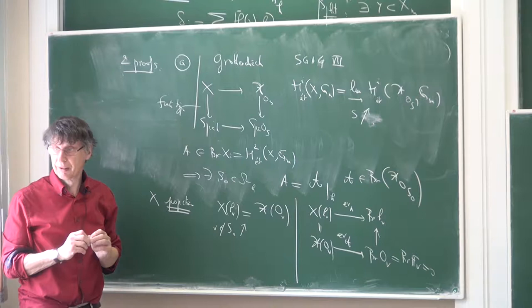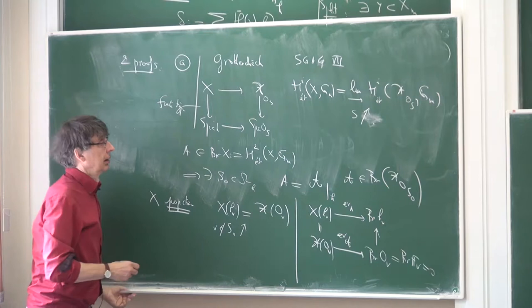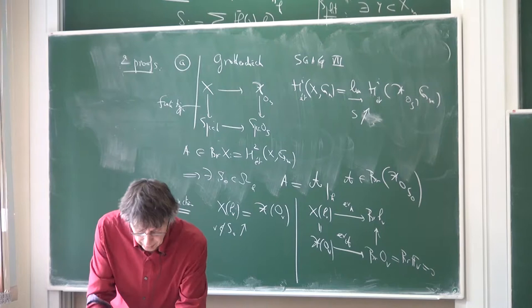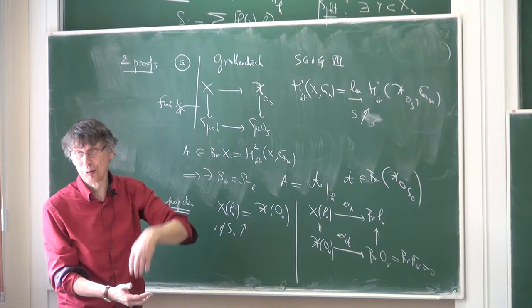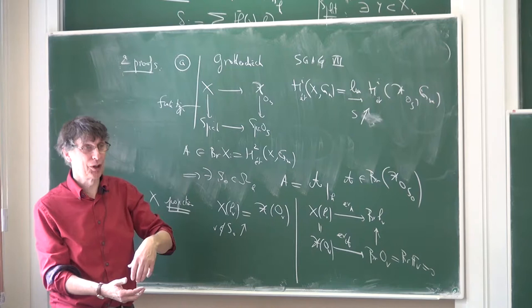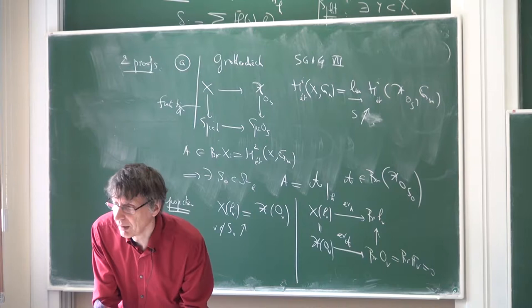This is a very standard proof; if you've looked at the proof of the weak Mordell theorem you'll recognize the same argument. The second proof: when a is Azumaya, you look at the Severi-Brauer scheme, and use the fact that the morphism is split, so the map from X(k_v) to Y(k_v) is surjective for almost all v.